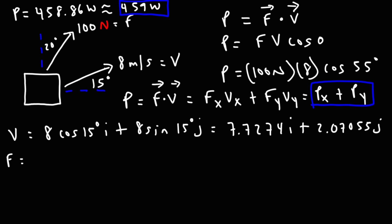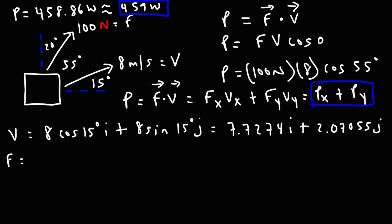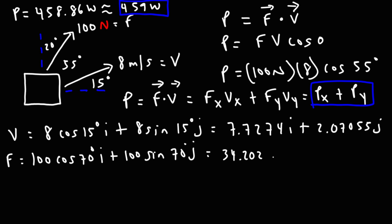Now let's do the same thing with the force. We know the angle between the vectors is 55 degrees, so relative to the x-axis, the force is at 55 plus 15 equals 70 degrees, measured counterclockwise from the positive x-axis. The magnitude of the force is 100 and the standard angle is 70 degrees. So: 100 cosine 70 equals 34.202 î, and 100 sine 70 equals 93.969 ĵ.